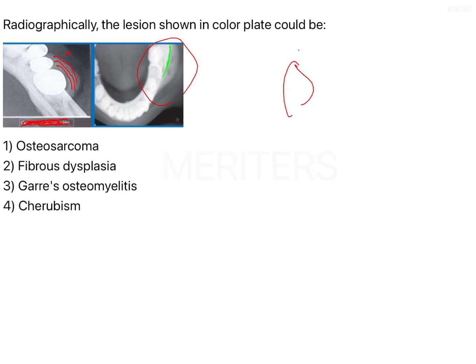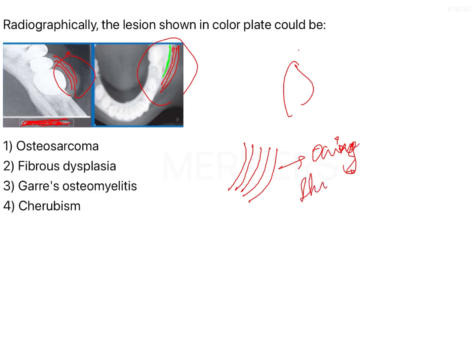In addition to that, you can see some radio-opacity present around the border of the mandible. This radio-opacity is in the form of lines, which is more discernible in this diagram. It is circumferential, giving the appearance of what is called the onion ring or onion skin peel appearance.